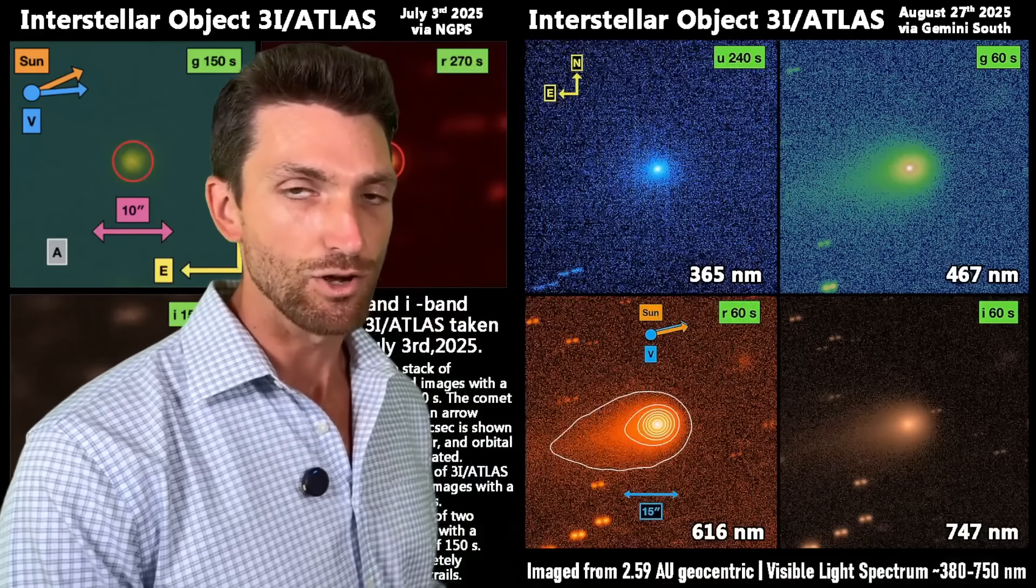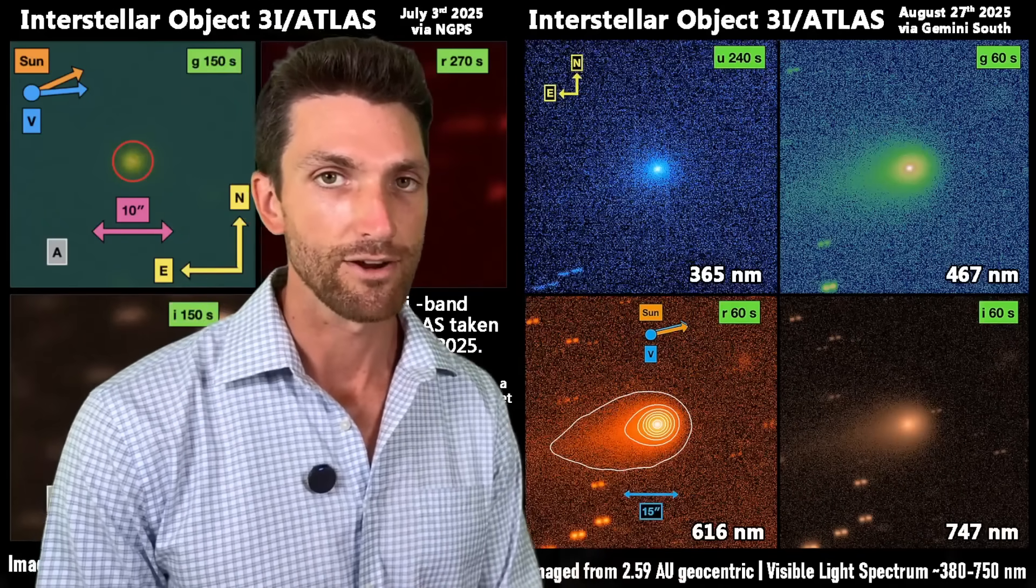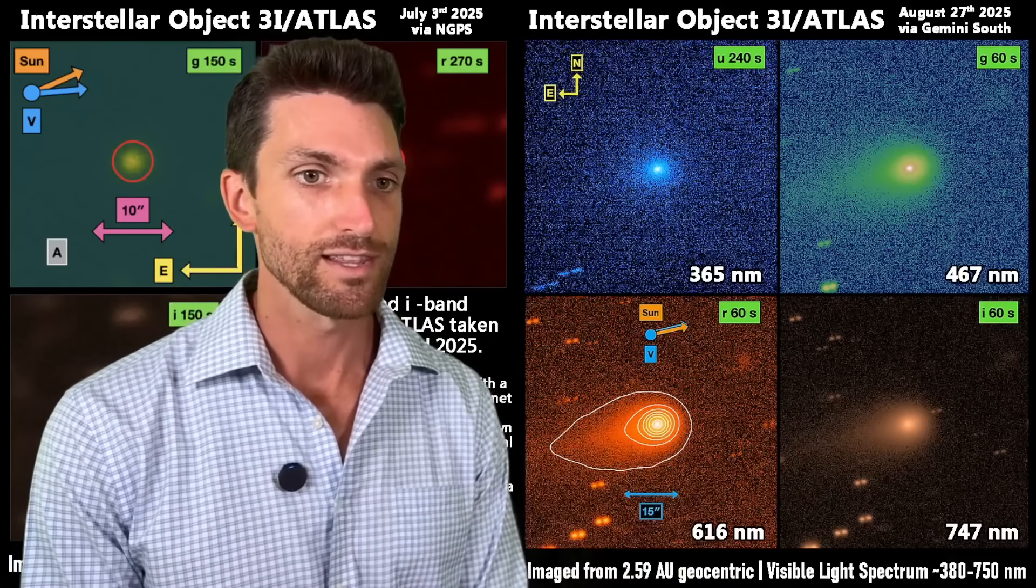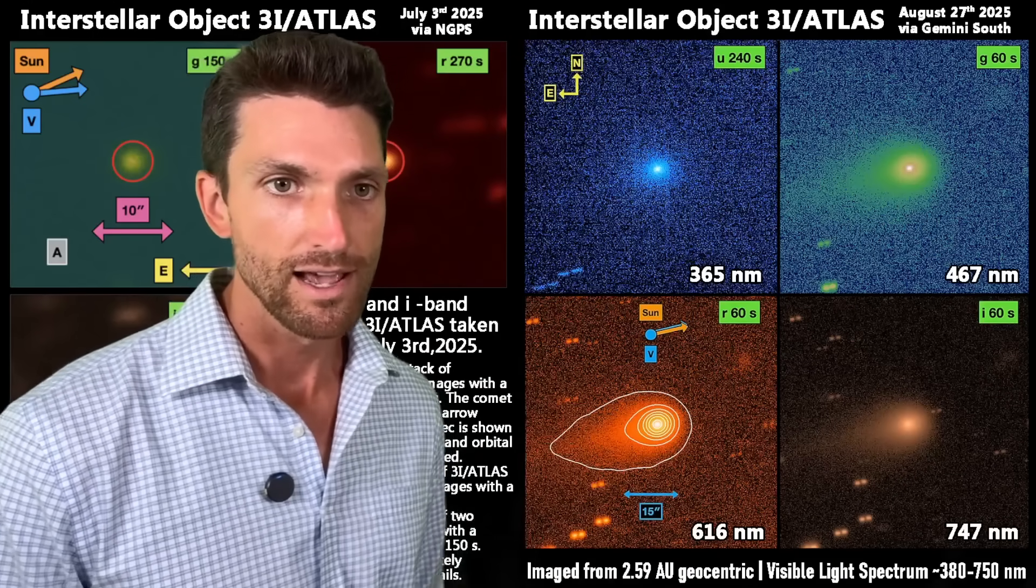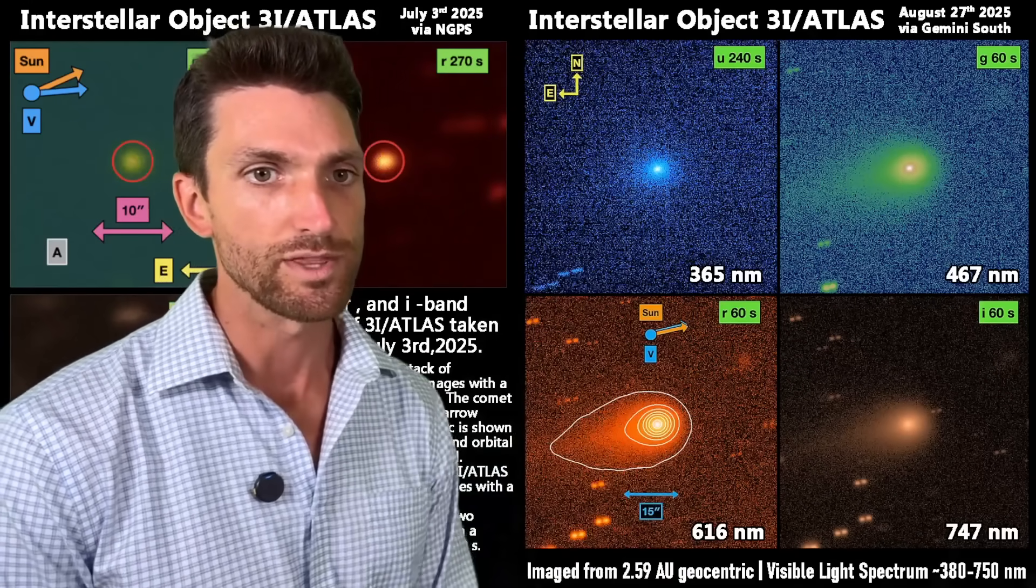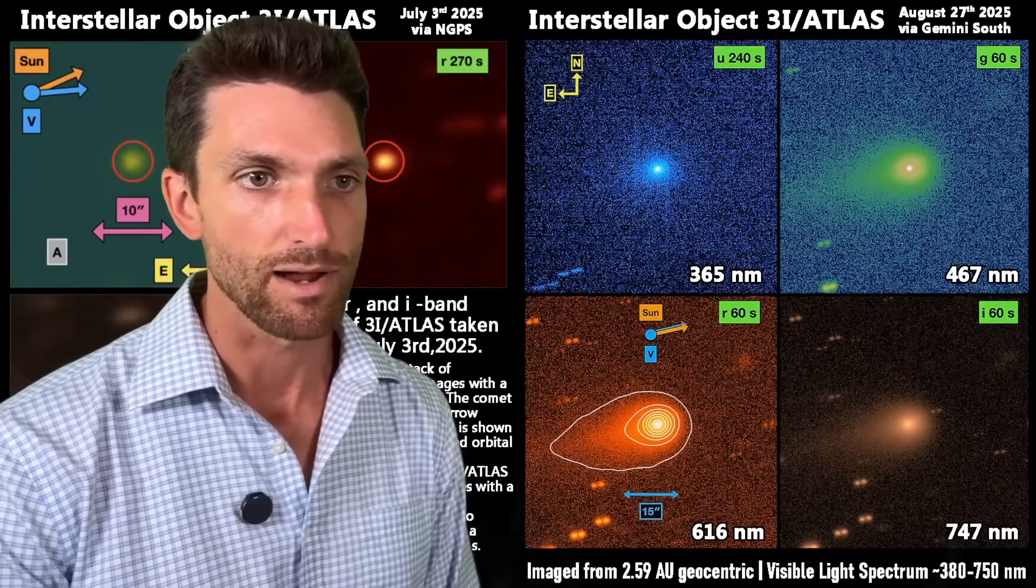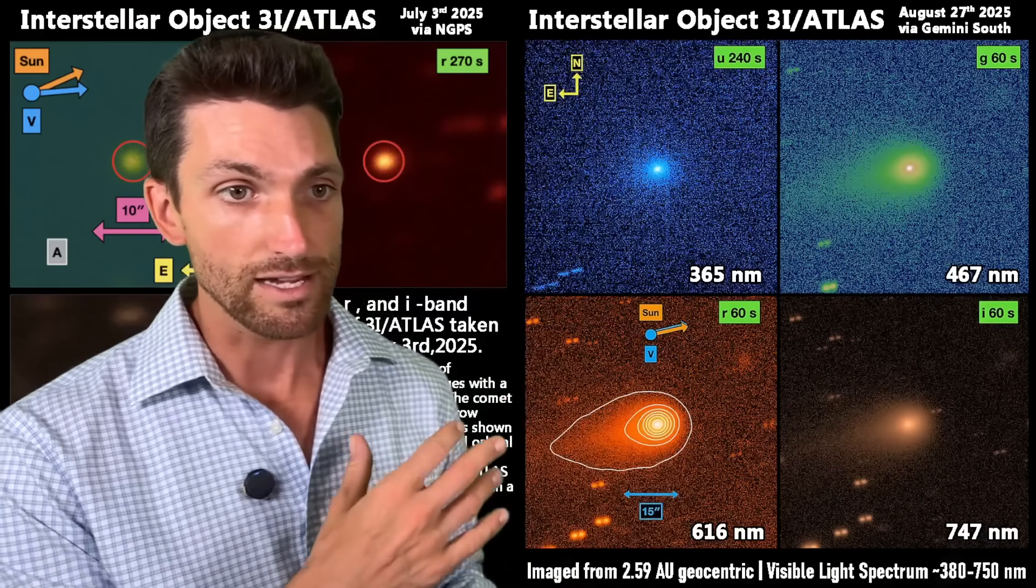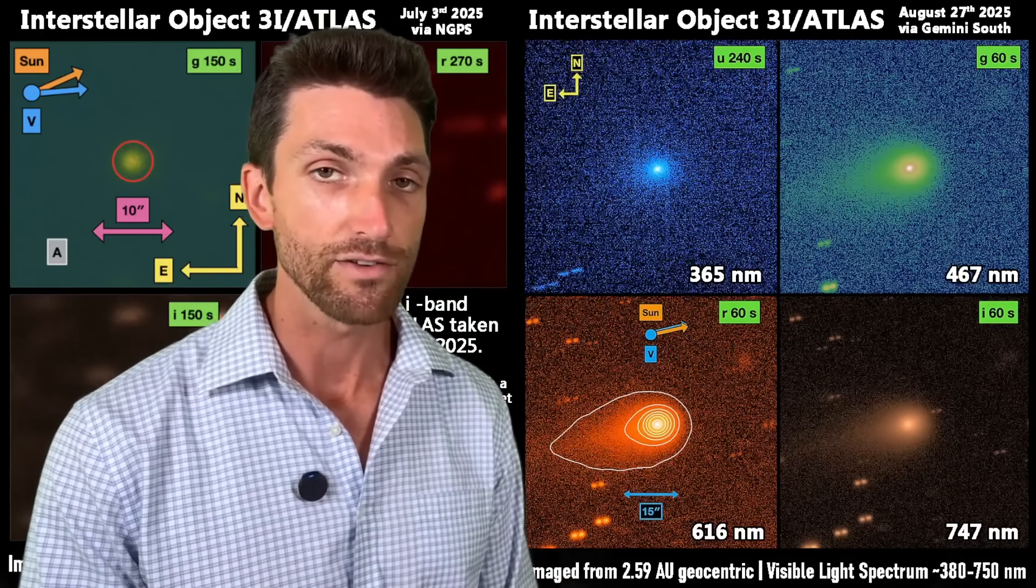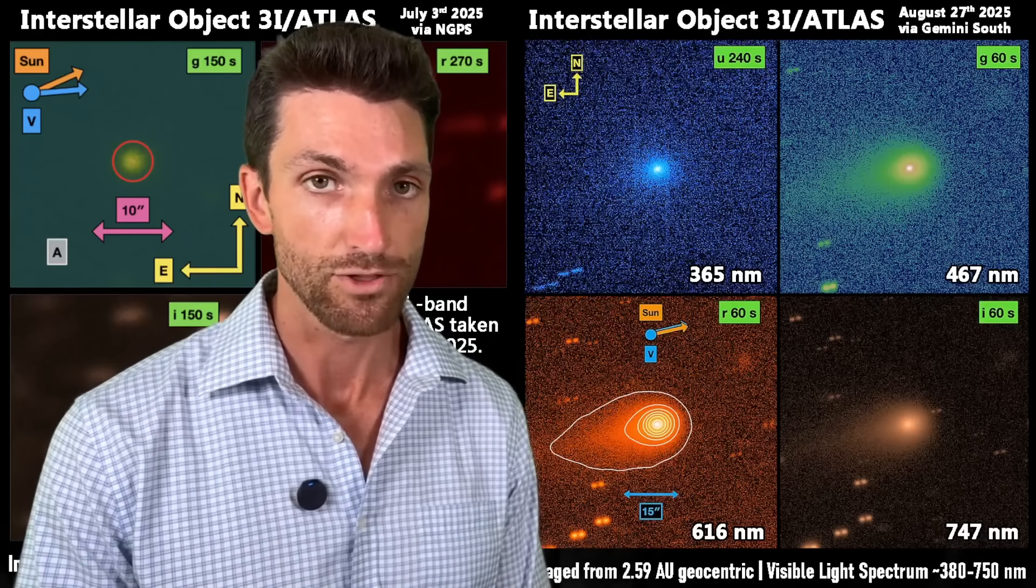And as it has gotten closer to the sun, it has finally evolved a typical cometary tail. So there is a lot of interesting things as it relates to three-eye atlas, but we are now seeing more normal cometary behavior from it, at least as observed with this composite imagery taken on August 27th via Gemini South. This is down in South America. There's also a Gemini North that's up in Hawaii. We have an image from earlier taken by Gemini North. So this is very clearly now looking like some sort of comet, though it does have a lot of features that are quite different than any sort of comet that we have basically seen fly through our solar system.